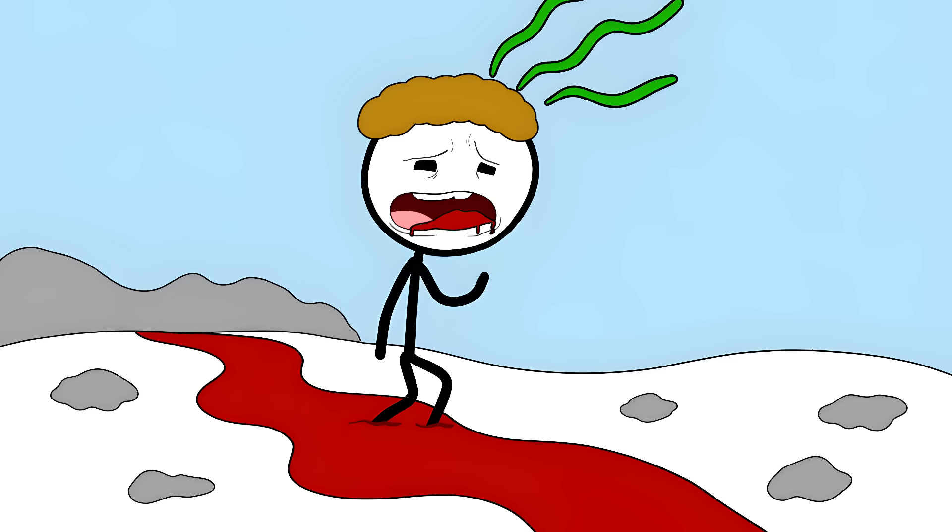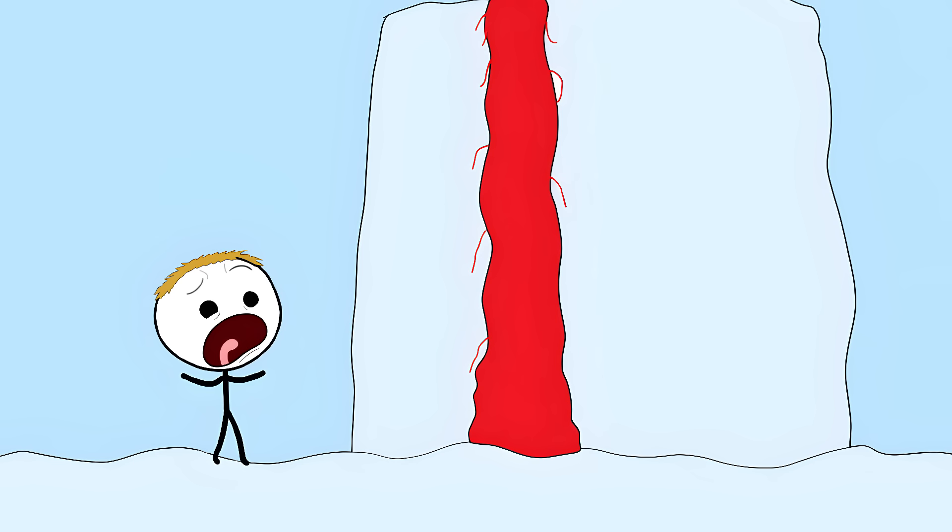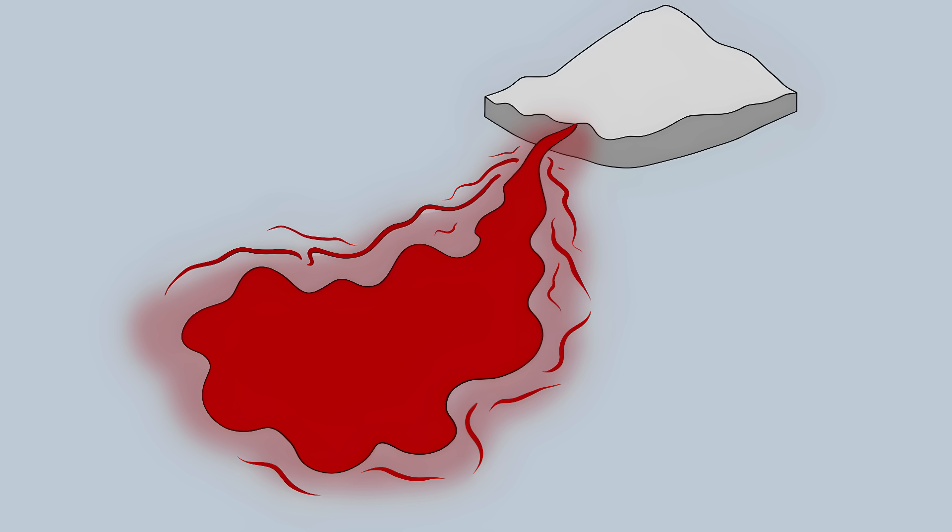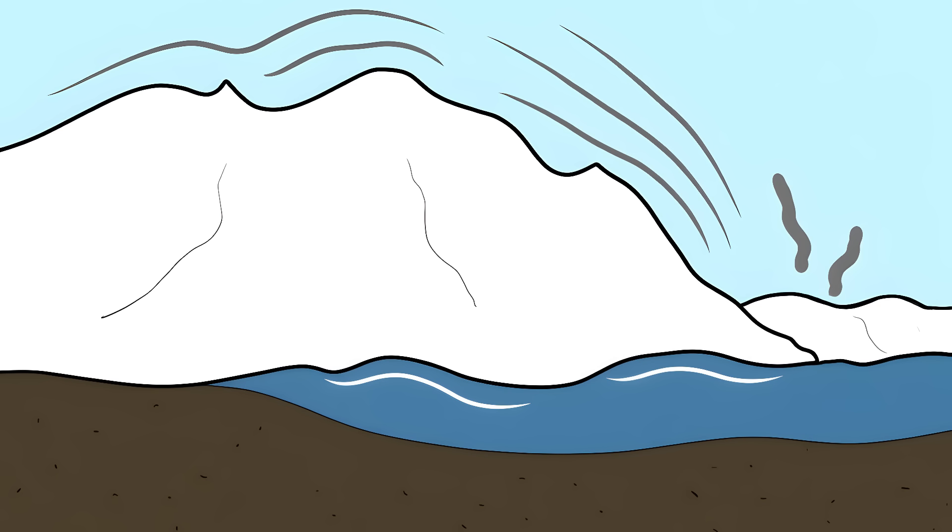Number three, the bleeding glacier. In the middle of Antarctica, there's a glacier that basically looks like it's bleeding. Five stories of red water pour out of pure white ice. It's called Blood Falls and it stains everything in its path. When scientists first saw it in 1911, they thought it was red algae. They were wrong.